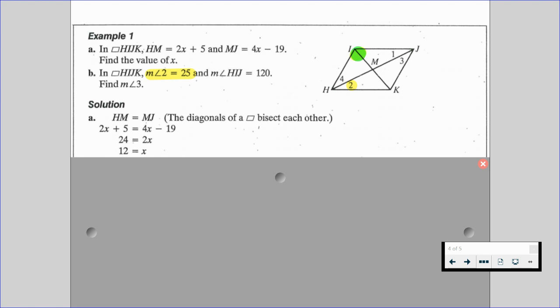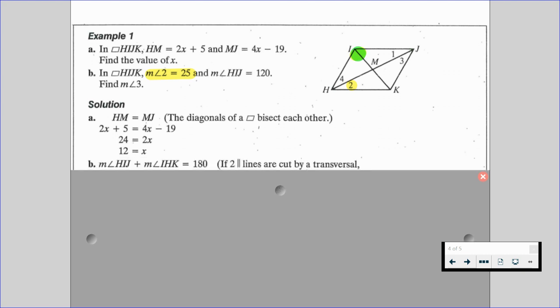So HIJK, that entire angle is 120 degrees. Well, if we think back to properties of parallelograms here, we would know that the measure of angle HIJ plus the measure of angle IHK is equal to 180 degrees because if two parallel lines are cut by a transversal, same side interior angles are supplementary. So we know that angle IHK is composed of measure of angle 2 and the measure of angle 4.